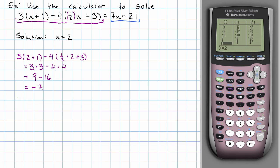On the right, we have 7 times 2 minus 21. That's 14 minus 21. Again, negative 7.